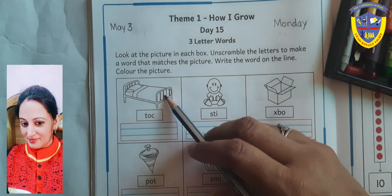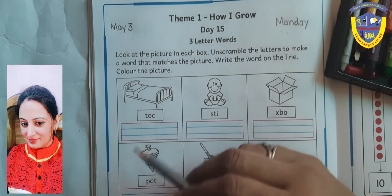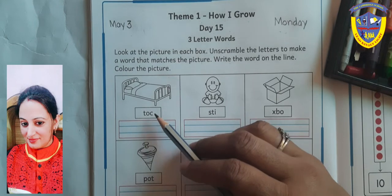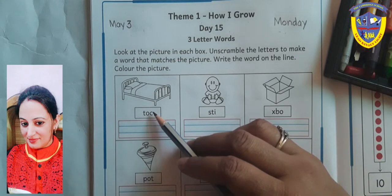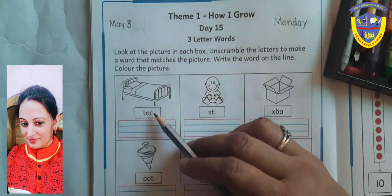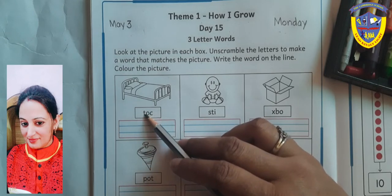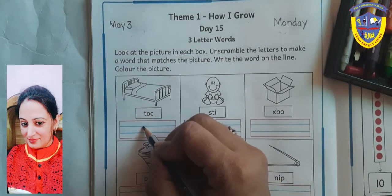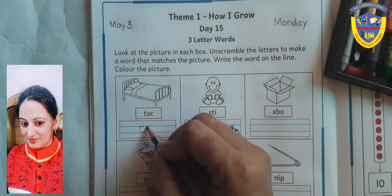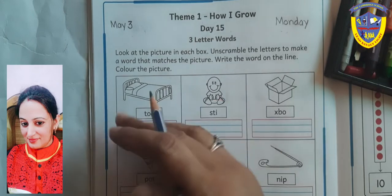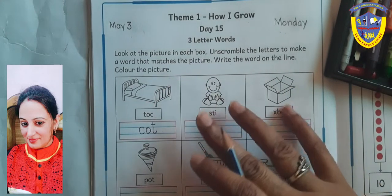So the first picture is cat. We can say 'bad' also, but here the letters are T, E, R, or K. So what we can make with those letters — cat. So we will write here: cat.